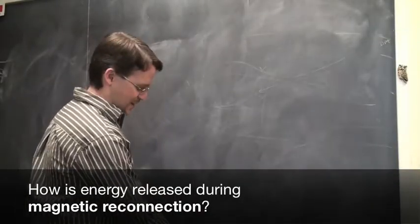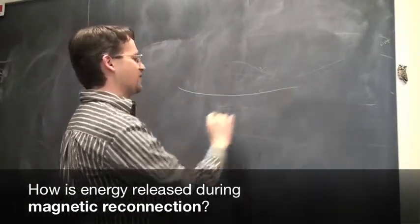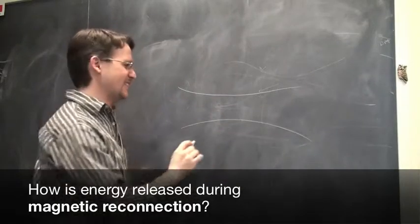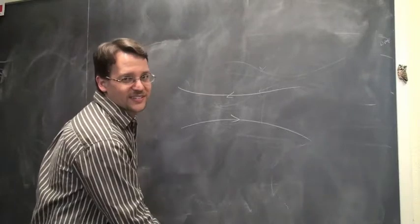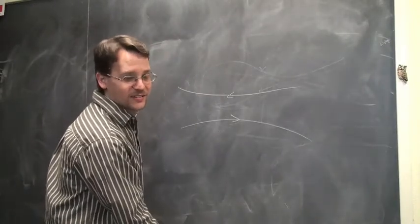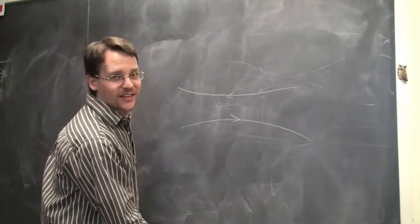The simplest description of a magnetic field - we draw these lines that point in one direction or the other. In the simplest description of a magnetic field, one finds that they act a lot like rubber bands.